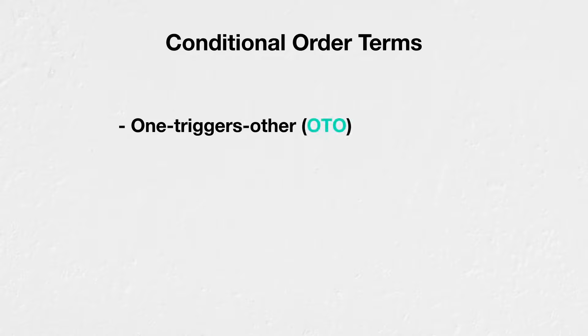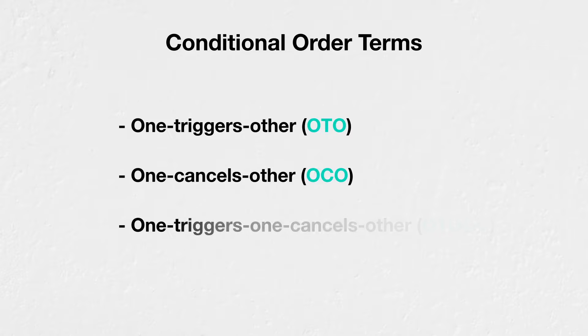To further aid in understanding how orders can be linked together via certain conditions, we will introduce three new terms and their respective acronyms: One Triggers Other, or OTO; One Cancels Other, or OCO; and One Triggers One Cancels Other, or OTOCO.